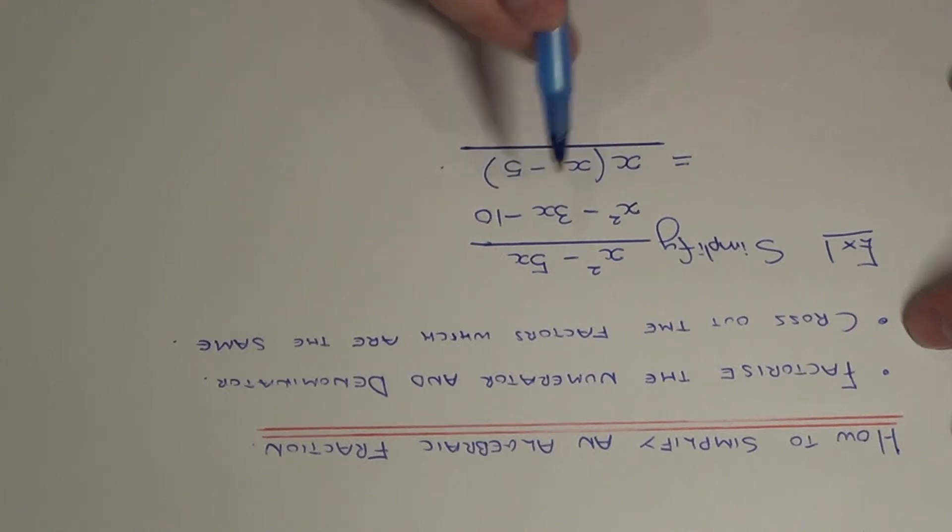So this one is a double bracket expression because we have three terms, so it is in the standard quadratic form.